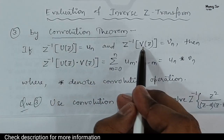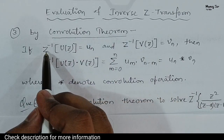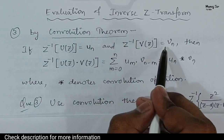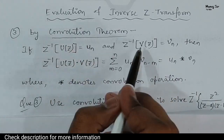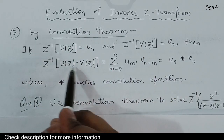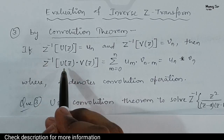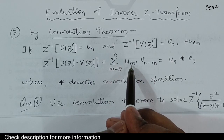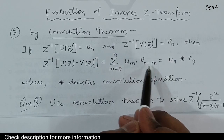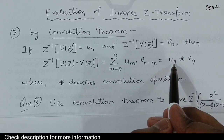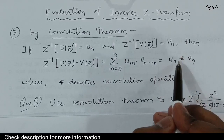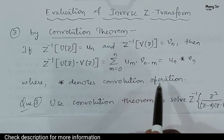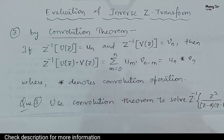Suppose you have V(Z) and U(Z), and we have the inverse Z transform of U(Z) — that is U(n) — and the inverse Z transform of V(Z) — that is V(n). In that case, finding the inverse Z transform of the product U(Z)·V(Z) equals the summation from m equals 0 to n of U(m)·V(n−m), which is U(n) convolved with V(n), where the symbol denotes the convolution operation.